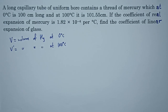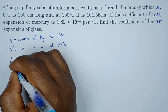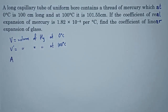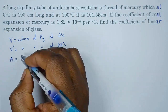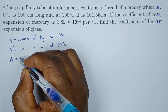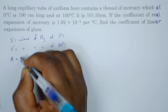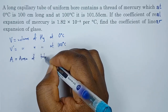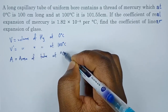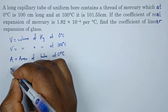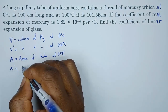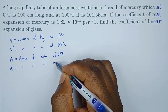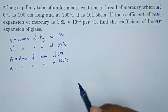The next thing we are going to look at is the cross-sectional area. So the cross-sectional area of the tube at zero degrees we can denote as A. Then A prime is the cross-sectional area of the tube at 100 degrees Celsius.